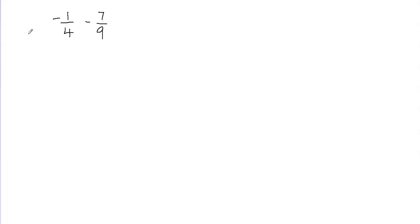In this video we'll learn how to add or subtract fractions with unlike denominators. You can see that my denominators are different in both the fractions. So the first thing we need to do is find a common denominator. I cannot add or subtract these fractions unless I have the same denominators.